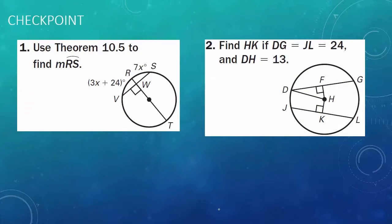Checkpoint: problems number 1 and 2 are yours. In problem number 1, you are to use Theorem 10.5 to find the measure of arc RS. In problem number 2, find HK if DG equals JL equals 24, and DH equals 13. That's it from me — I'll see you all soon.